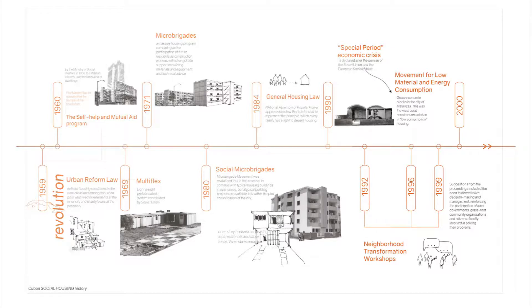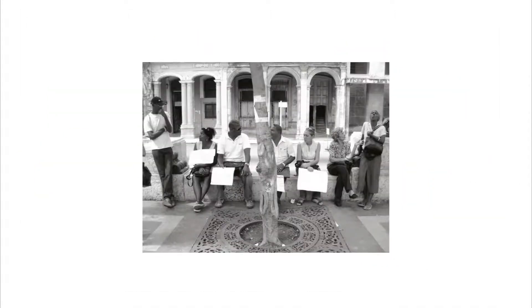In 1984, the new general housing law allowed the sale of housing between private parties, but only with the government's approval. By the 1990s, over 85% of Cuban households owned their own homes and paid only small fees for maintenance and utilities. In 2003, another law was passed that prohibited all private sales of property; however, this did not stop the exchange of homes between Cubans.